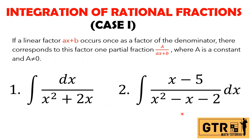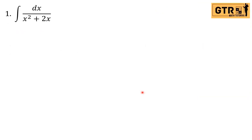Let us answer number one and two. For number one, we have the integral of DX over X squared plus 2X. The first step is to factor out the common factor. We have X squared and 2X, so we factor out X. Therefore, we have the integral of DX over X times X plus 2.